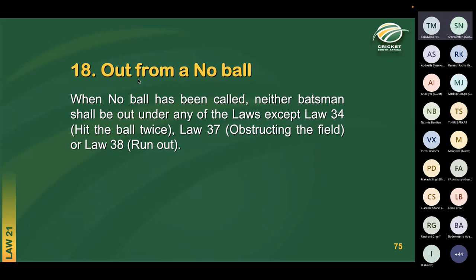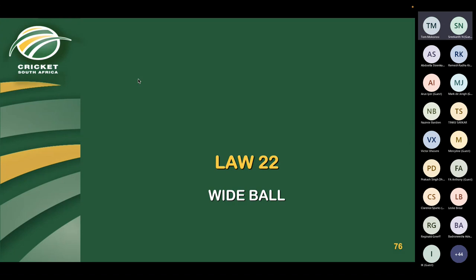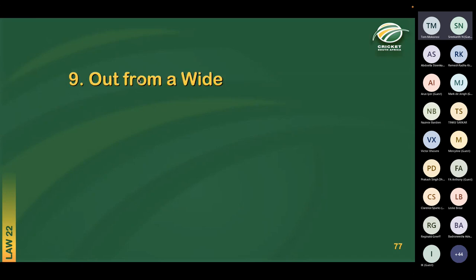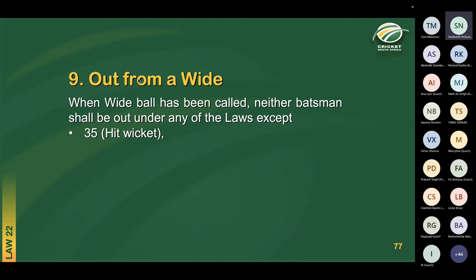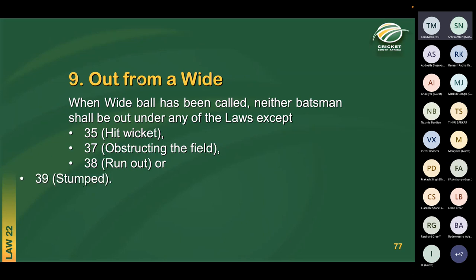That's it for no ball — now we move on to wide ball. The same type of question is asked in the Level Two exam: how can a batter be out from a wide? There are four modes of dismissal from a wide: hit wicket, obstructing the field, run out — and the extra one compared to no ball — a batter can be out stumped off a wide.